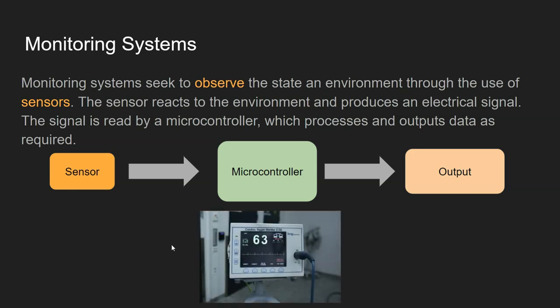For example, a heart rate monitor or ECG is attached to your finger or chest and has a sensor — a pressure sensor or electrical sensor — that reacts and produces an electrical signal passed to the microcontroller. It processes that data and produces a graph as output. It may also have controls where, if the heart rate goes above 180 or below 30, it sets up a visual or audio alarm, or transmits a signal to another device elsewhere in the hospital to alert medical staff.